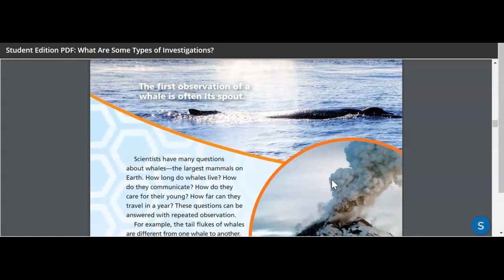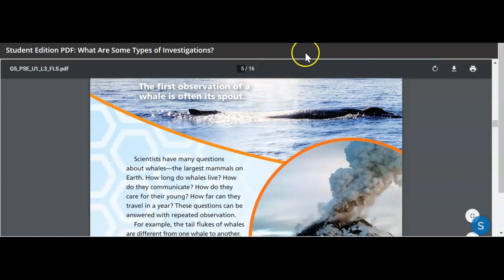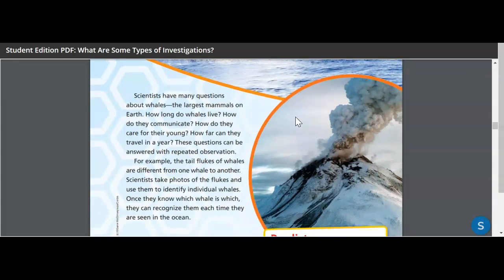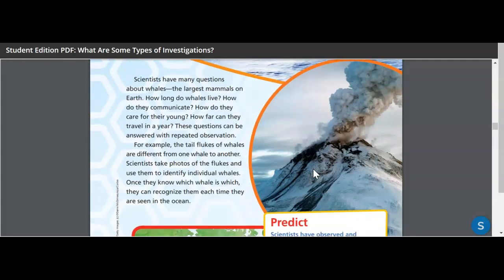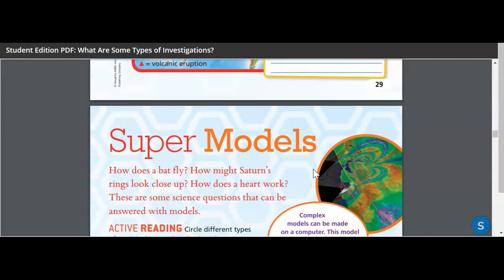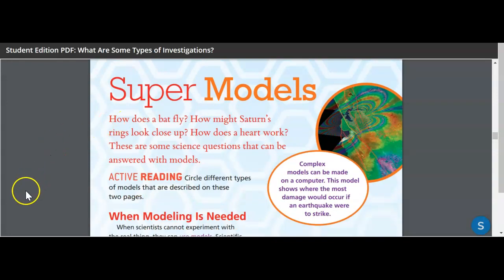So we're moving on to the next page. The first observation of a whale is often its spout, the water it shoots up out of its back. So scientists have many questions about whales, the largest mammals on earth. How long do whales live? How do they communicate? How do they care for their young? How far can they travel in a year? These questions can be answered with repeated observations, just like the geyser. For example, the tail flukes of whales are different from one whale to another. Scientists take photos of the flukes and use them to identify individual whales. Once they know which whale is which, they can recognize them each time they are seen in the ocean. You're using these observations to see what's already happening, but you can also use them to predict what will happen. So I'm going to end this here for part one and I'll come back for part two.